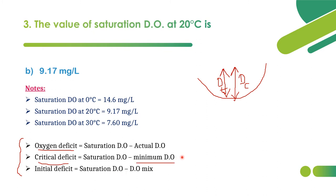Critical deficit = saturation DO − minimum DO. Initial deficit = saturation DO − DO_mix, where DO_mix is the dissolved oxygen when sewage mixes with the river stream. We shall see how to calculate DO_mix and mixture concentrations in the next question.